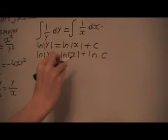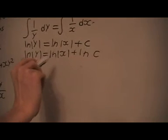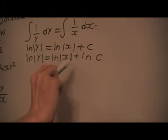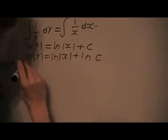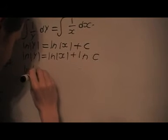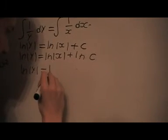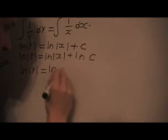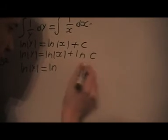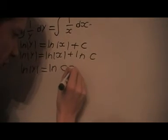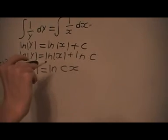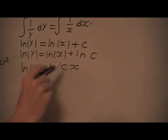And then I can use my logarithm rules. And I can write that as... still got that on this side. And then I have the logarithm of... I'll put the constant in front because that's what you do generally.